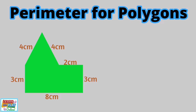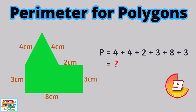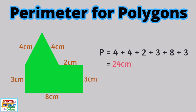Here is a strange looking polygon. Although it may look difficult, finding the perimeter is still the same — just add up all the lengths of the sides together. The perimeter of this shape is 24 centimeters.